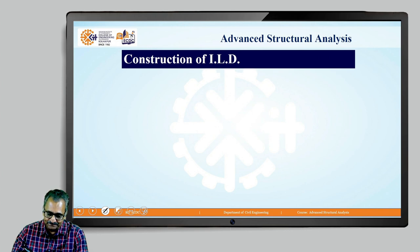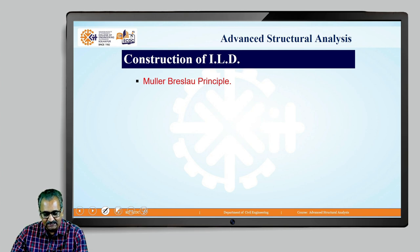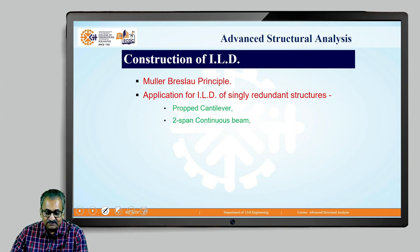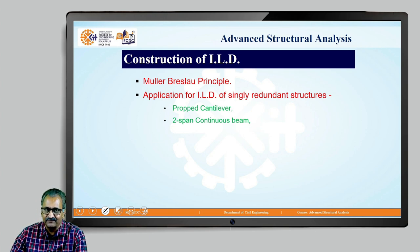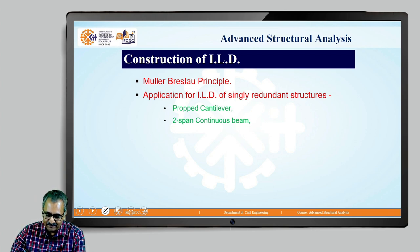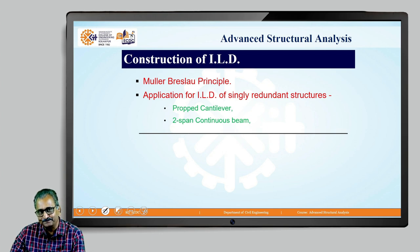How do we construct an ILD? To begin with, we take resort to one important principle — the Müller-Breslau principle. The Müller-Breslau principle can be used for the construction of ILDs of singly redundant structures, for example a propped cantilever or a two-span continuous beam. We would try to consider one example on each of these sub-structures, but this principle would not be so convenient for multi-redundant structures, where its application becomes slightly complicated.